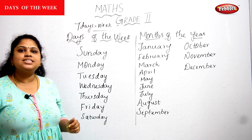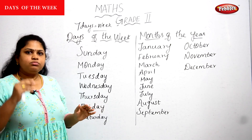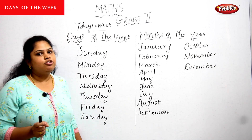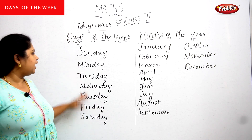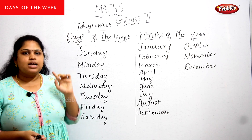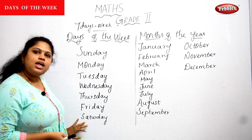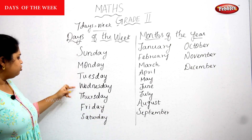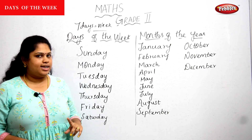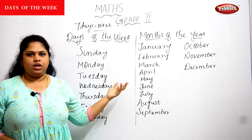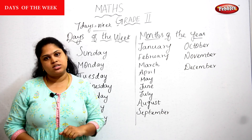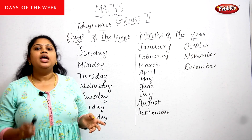In a week, Sunday is the first day and Saturday is the last day. Saturday and Sunday are holidays. We cannot say Monday is the first day — Sunday is the first day. There are five working days and two holidays in a week. One day is equal to 24 hours; once 24 hours are completed it moves to the next day.